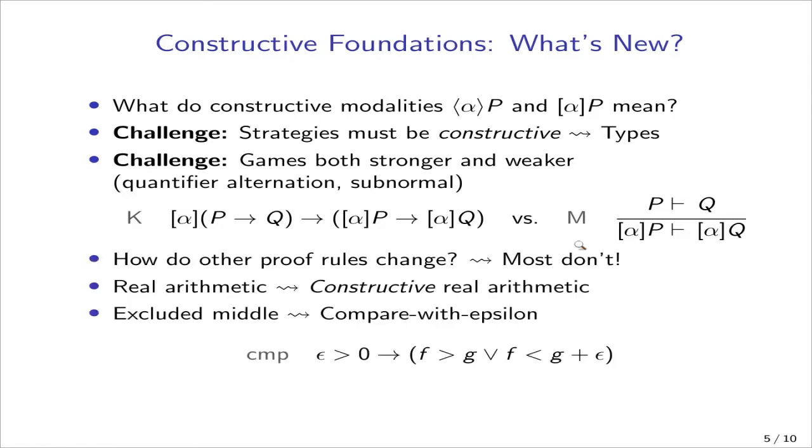Speaking of proof rules, how do the other proof rules change when we make them constructive? Most of them change only in small ways. For most of them, the only change is that we need to phrase it as a constructive natural deduction calculus. That's great. We can reuse a lot of our knowledge of how to prove hybrid games. However, there are some very important changes. As we showed in the example, there is a lot of first-order reasoning, arithmetic or algebraic reasoning. And this all has to be constructive now. You can do this, but there is very little in the way of automation compared to very good automation for classical arithmetic. So you have to be ready to do a bit more proofs yourself.